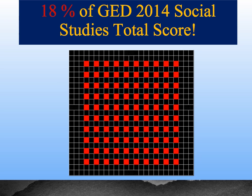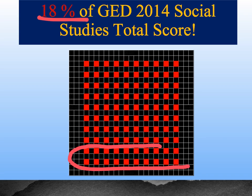You may be thinking, why should I waste my time writing this response? Well, the answer to that is it's 18% of your score on the Social Studies test. If we look here at all our dots here on the page, 18% — each row has 10 in it — we're going to be choosing this many of these 100 dots that are on the page. That's a good chunk of your score and so it's well worth the time that it's going to take to do this response.